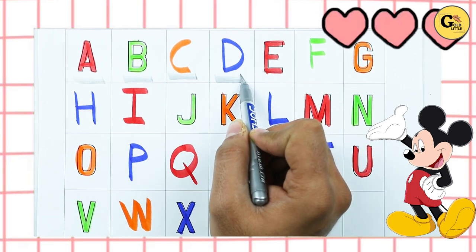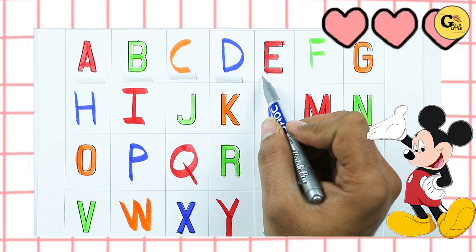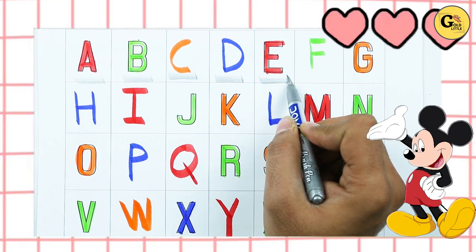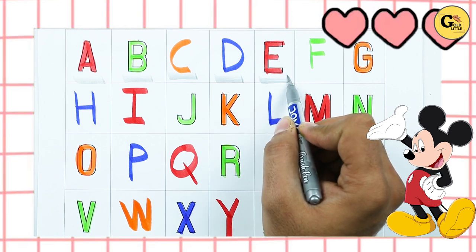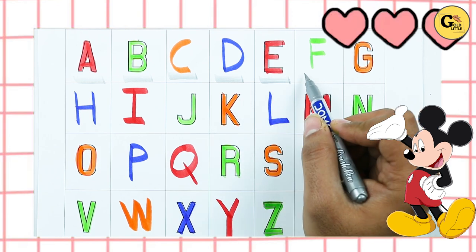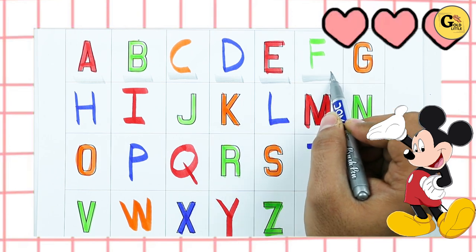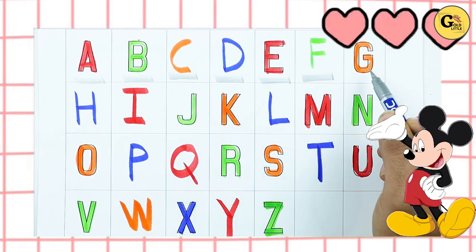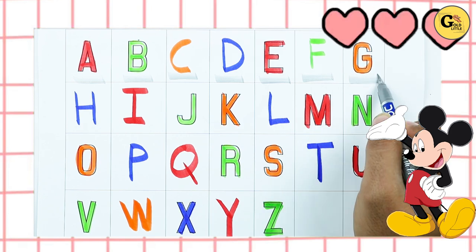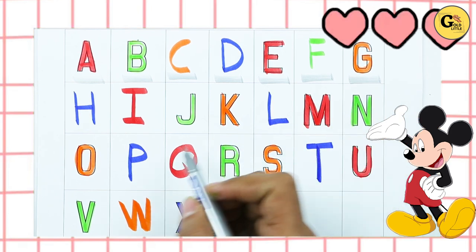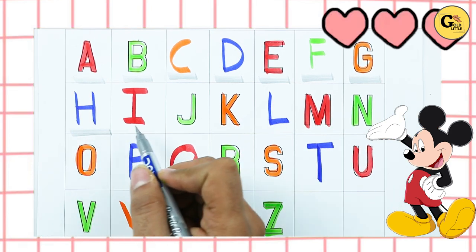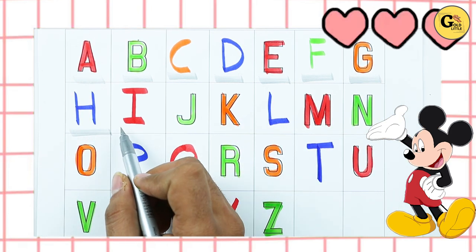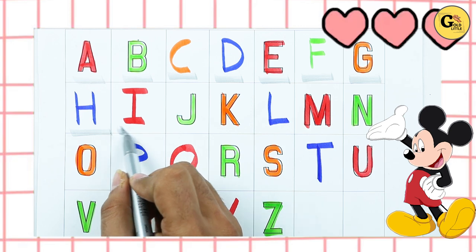D. D for dog. E. E for elephant. F. F for fish. G. G for goat. H. H for hen.